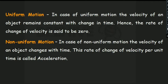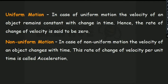In non-uniform motion, velocity changes with time, and that change in velocity produces acceleration. Uniform motion: velocity is constant, acceleration is zero. Non-uniform motion: velocity changes, so there is acceleration. Acceleration is produced in non-uniform motion.